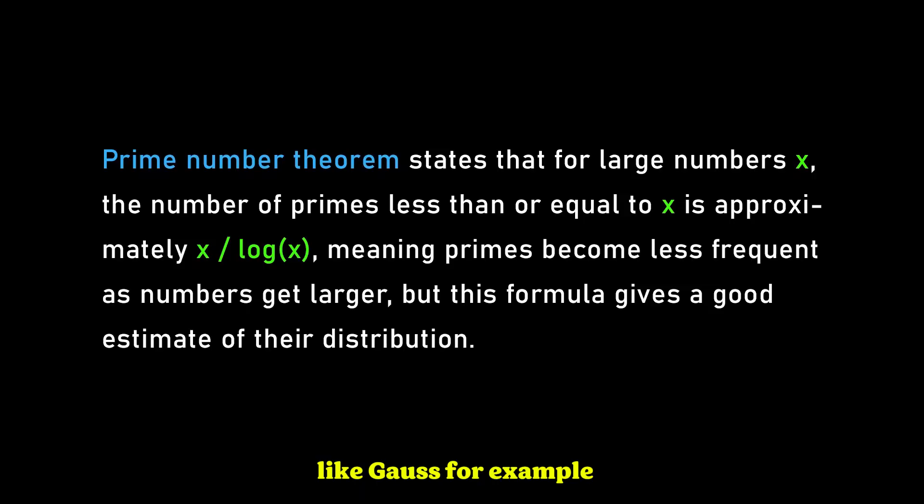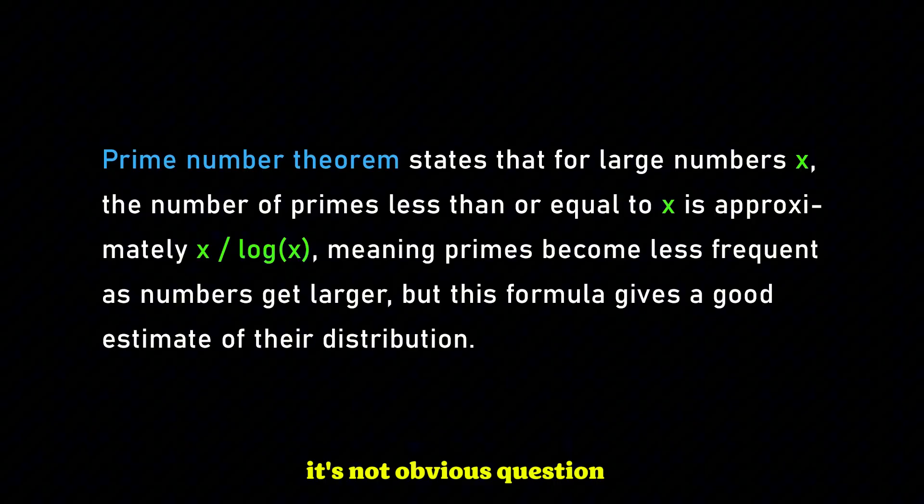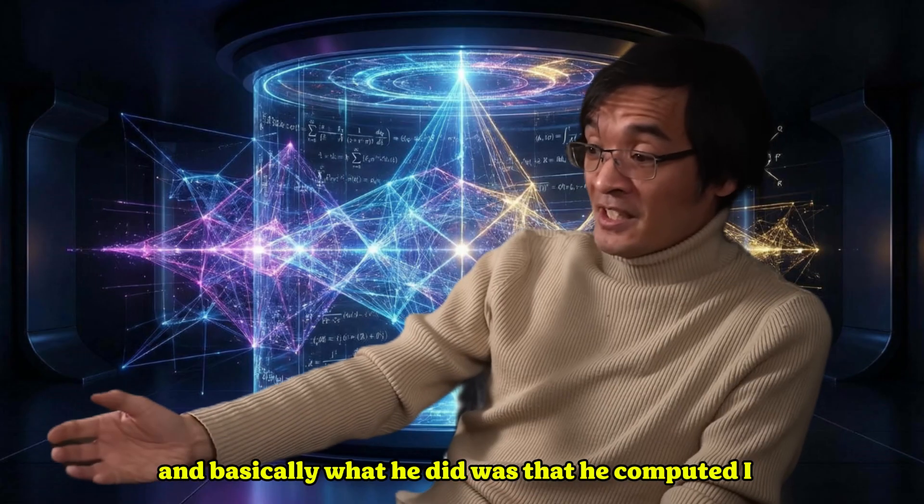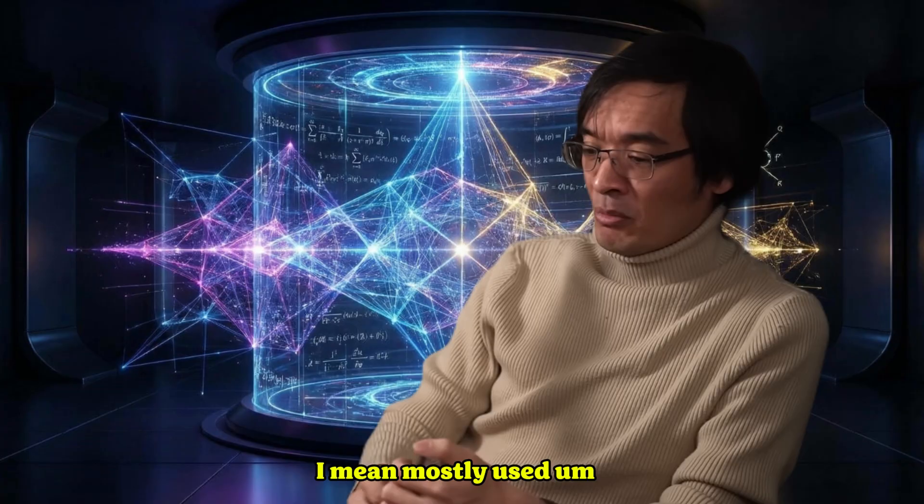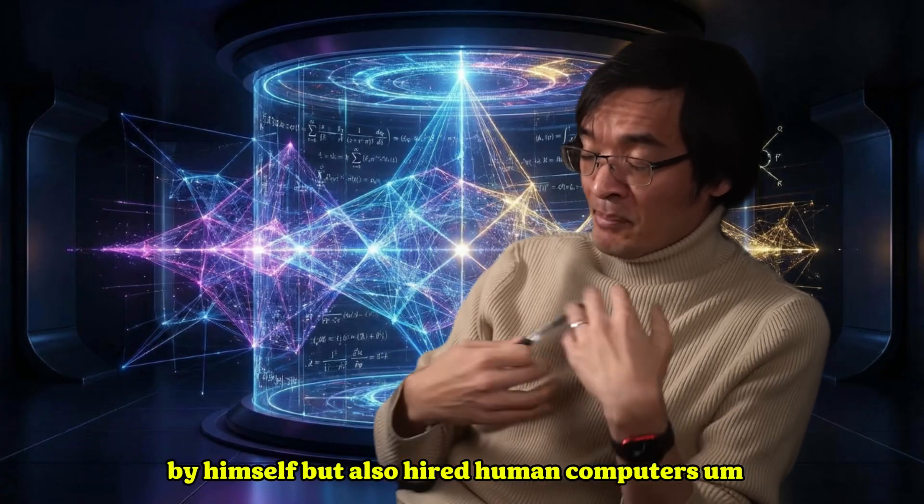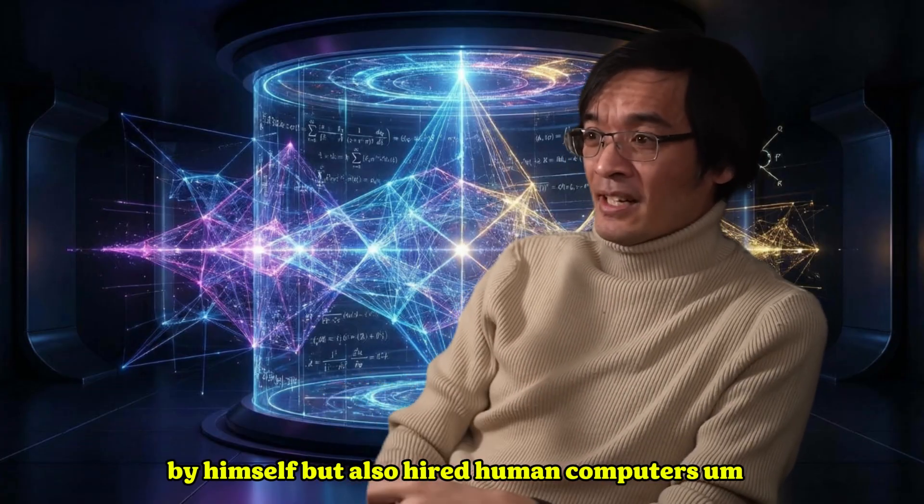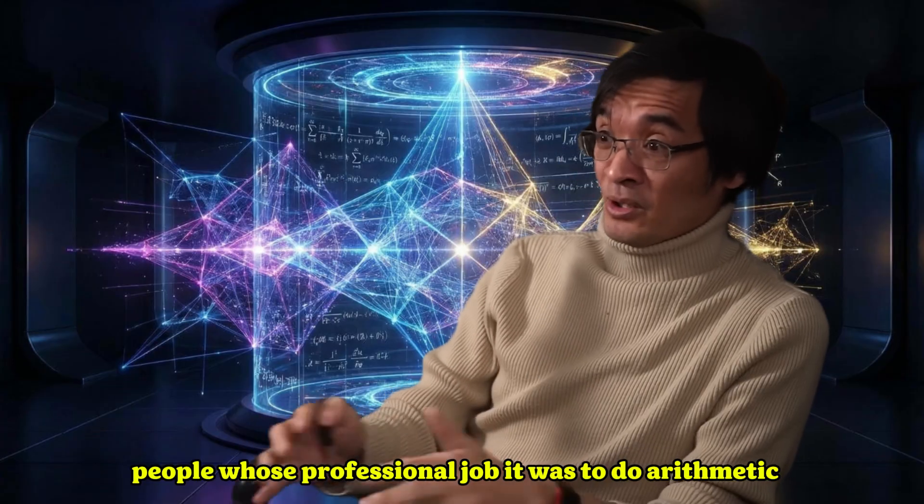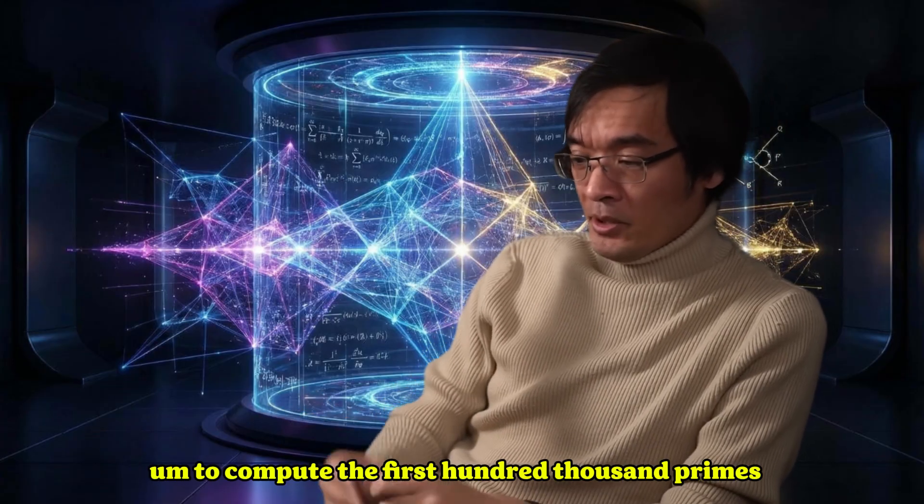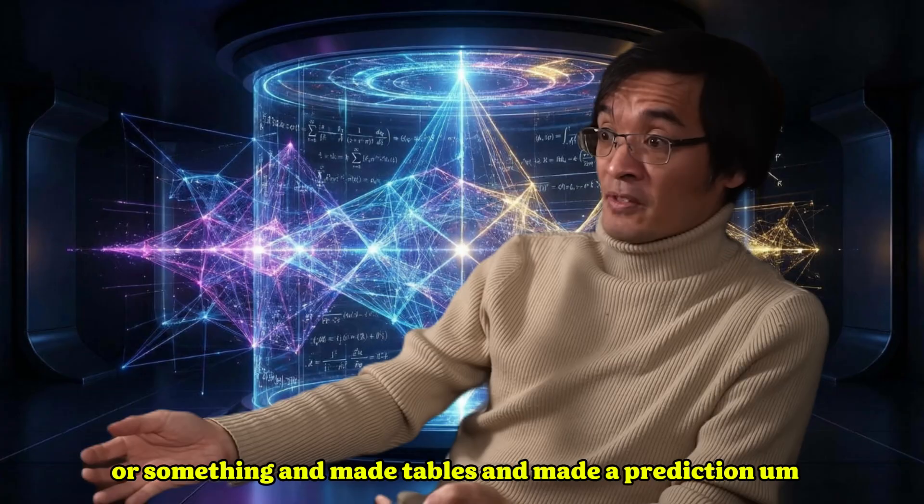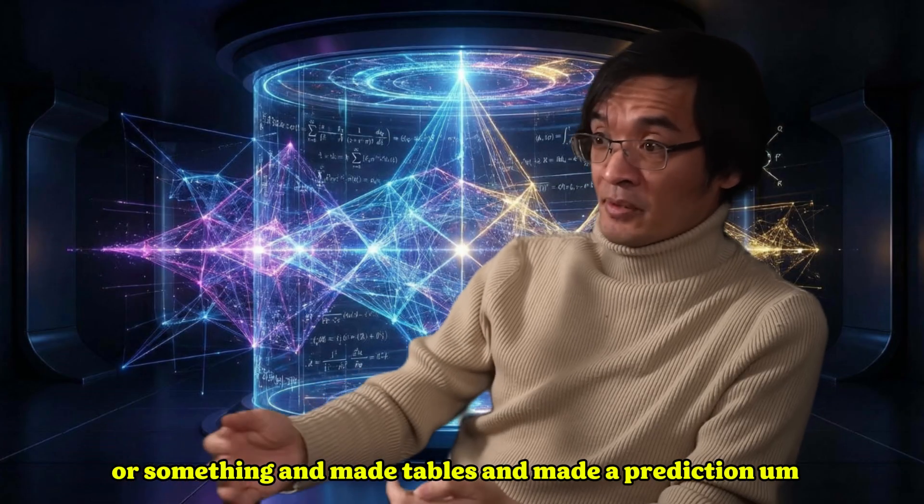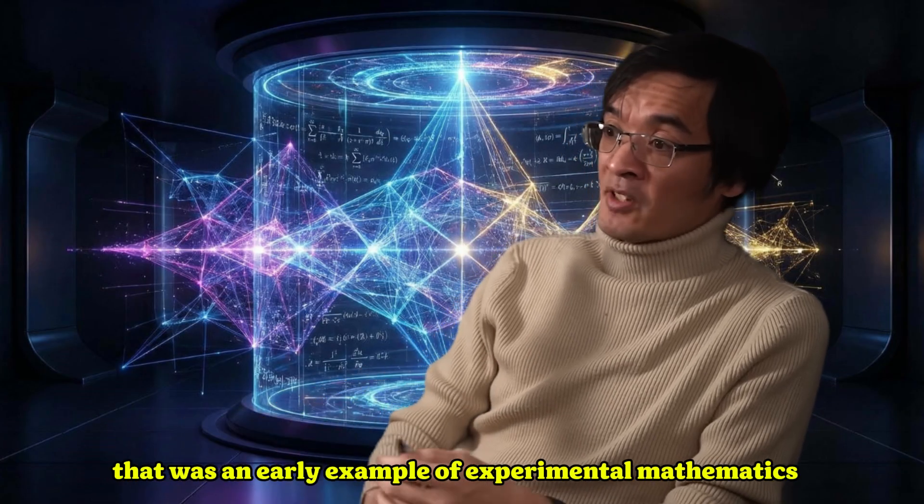he discovered, he conjectured the most basic theorem in number theory, which predicts how many primes are up to a million, up to a trillion. It's not an obvious question. And basically what he did was he computed, mostly by himself, but also hired human computers, people whose professional job it was to do arithmetic, to compute the first 100,000 primes or something, and made tables and made a prediction. That was an early example of experimental mathematics.